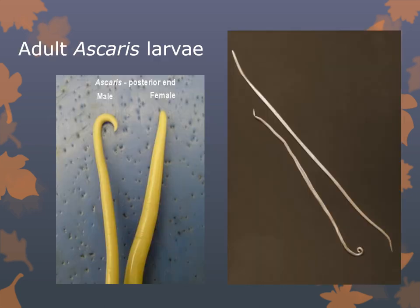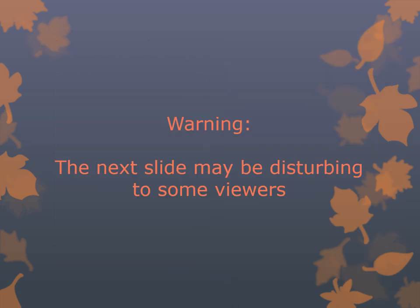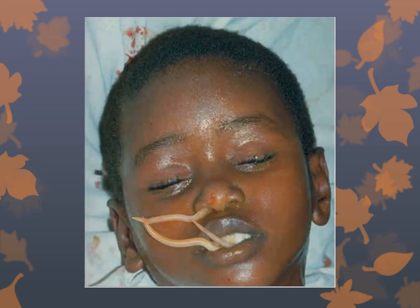The female Ascaris is much longer than the male and does not have a hooked tail, whereas the male is smaller with a hooked tail used for copulation. Ascaris usually live in groups and can be coughed up through the respiratory tract — they do have a lung phase. They can be passed in the gastrointestinal tract or coughed up through the oropharynx and nasopharynx.